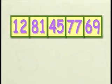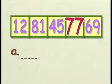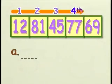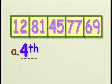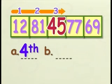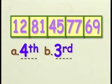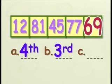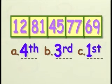Look at the diagram. A: Seventy-seven is the what number from your left? Seventy-seven is the fourth number from your left. B: Forty-five is the what number from your left? Forty-five is the third number from your left. C: Sixty-nine is the what number from your right? Sixty-nine is the first number from your right.